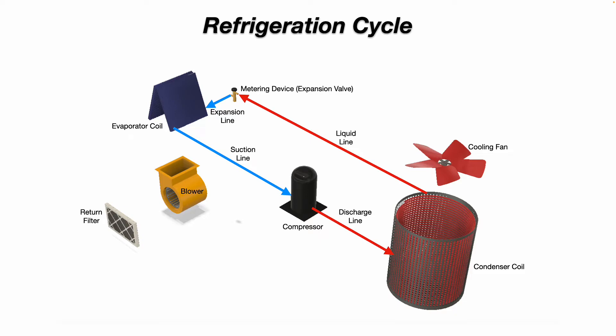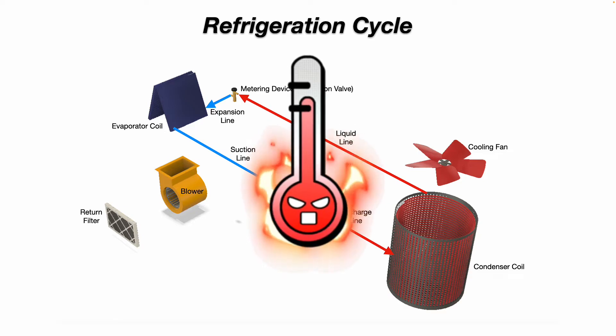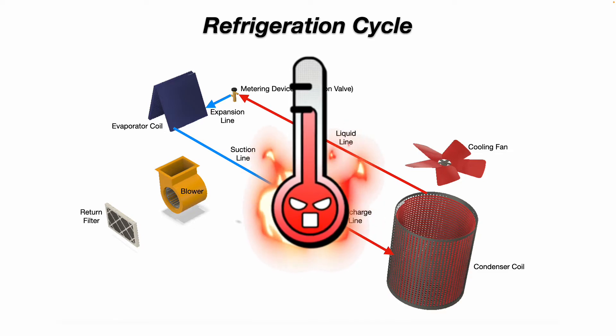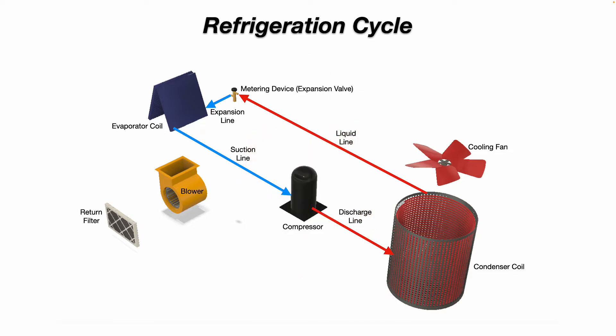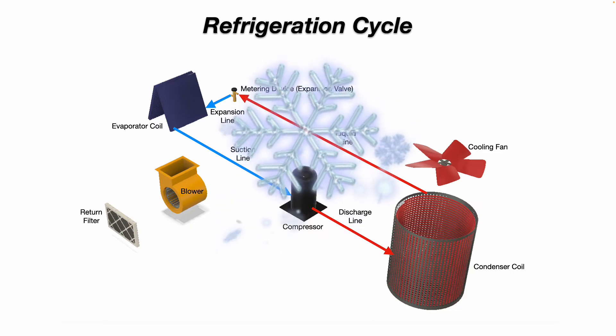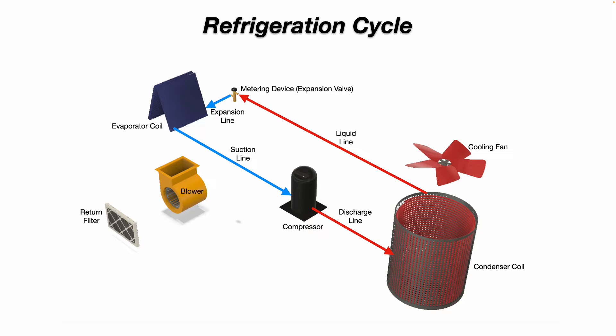Remember, there's a temperature and pressure relationship with refrigerant. When you increase the pressure, you're going to increase the temperature. Conversely, when you decrease the pressure, you decrease the temperature. So leaving the compressor on the discharge line, we have a high-temperature, high-pressure vapor going into the condenser coil outside.